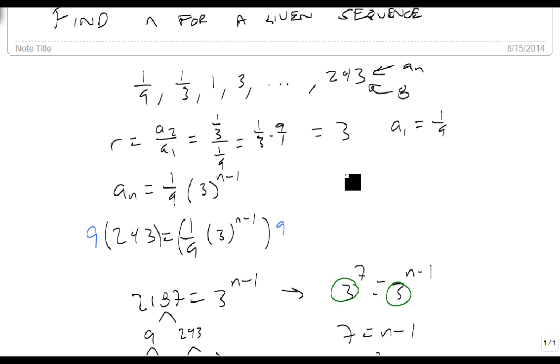And we can find that just as well if we wanted to. We could do 1/9, 1/3, 1, 3, 9, 27, 81, 243. And we go 1, 2, 3, 4, 5, 6, 7, 8. So there are, in fact, 8 terms here if we flesh it all the way out.